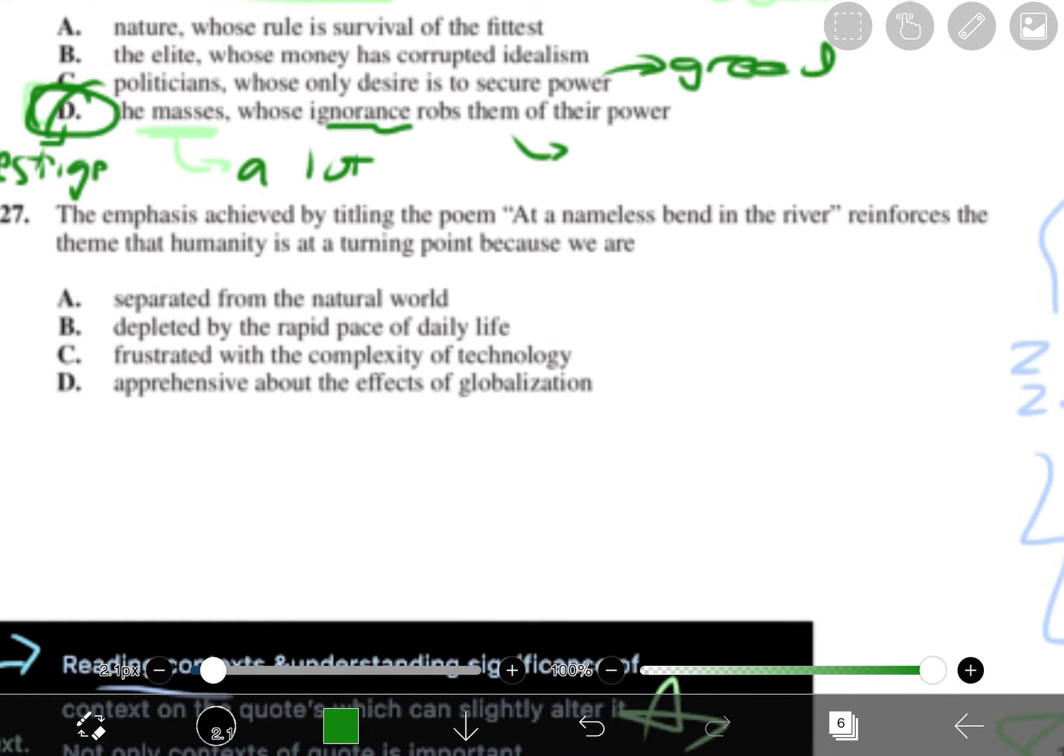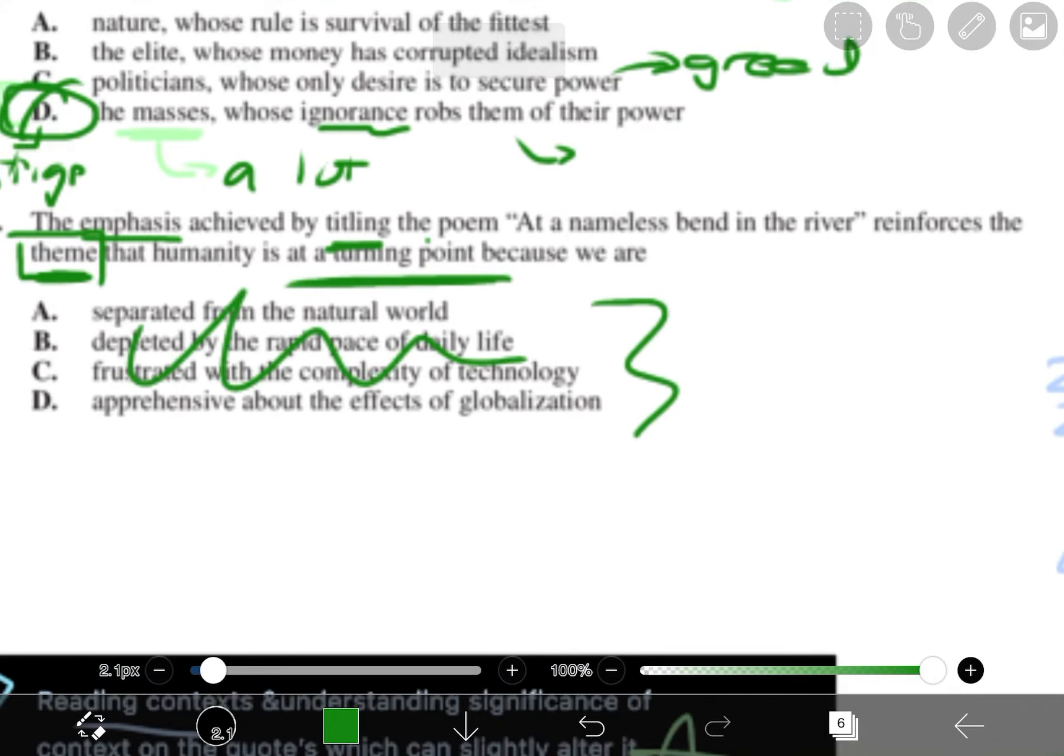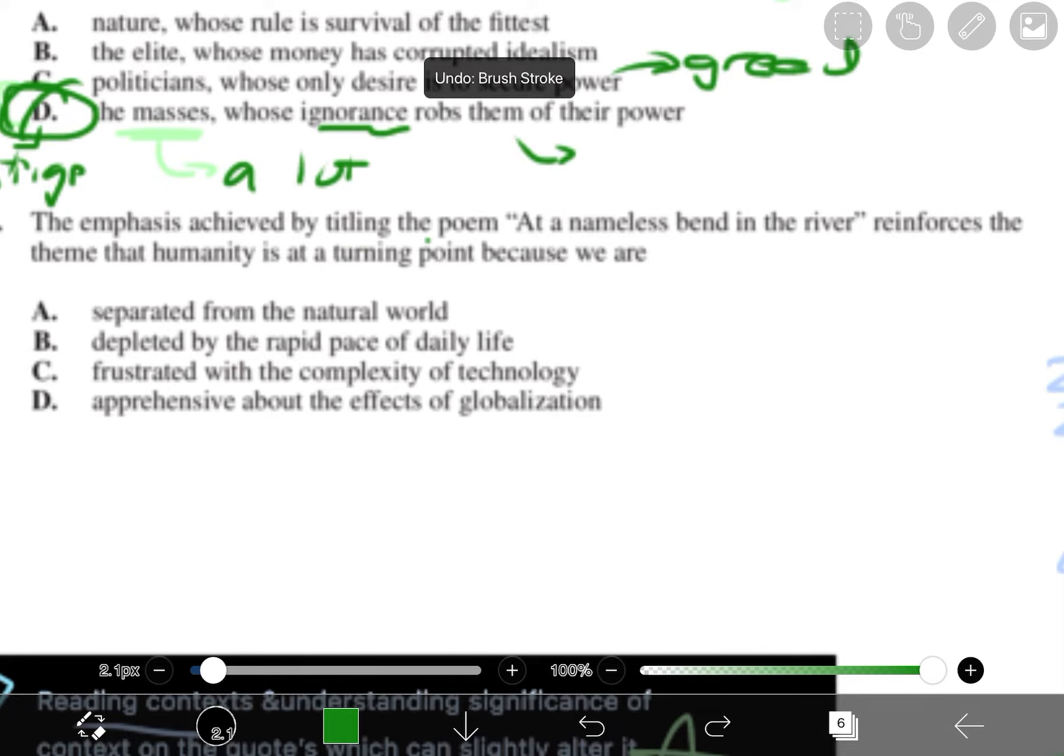The emphasis achieved by titling the poem at a nameless bend in the river. So it's going to be about the title and emphasis. So whatever the right answer is, it's going to be emphasizing something. Reinforces the theme that humanity is at a turning point. So we're looking for the theme that humanity is at a turning point. So then that kind of means that our right answer will be something that is important because it's emphasizing something. The theme, whatever answer we have here, it's going to be emphasized of something. It's important. It's not just a random statement. It's important. And it's going to mention something about turning points or change. Turning point, maybe choices, change, and that will be your right answer. Whatever right answer that has turning point, emphasis, etc. So seriously, reading comps, the question gives you the answer.